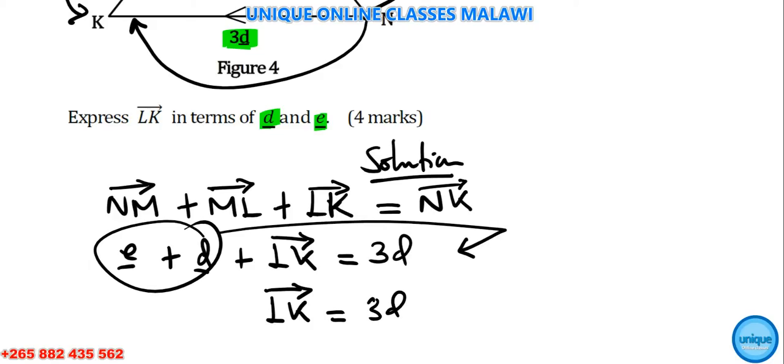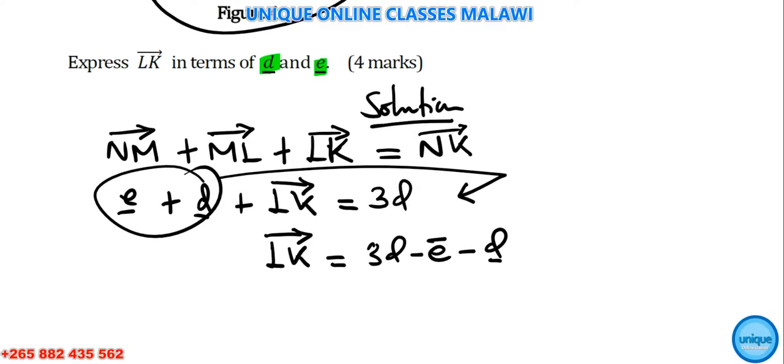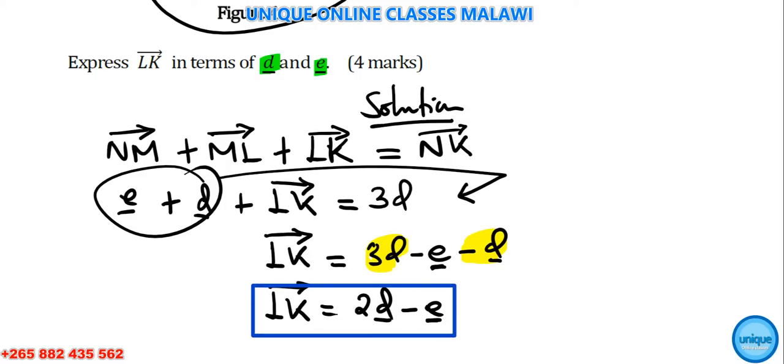Moving e and d to the other side, combining like terms together, we're going to have LK equals 3d - d - e, which gives us 2d - e. That's the solution which was needed.